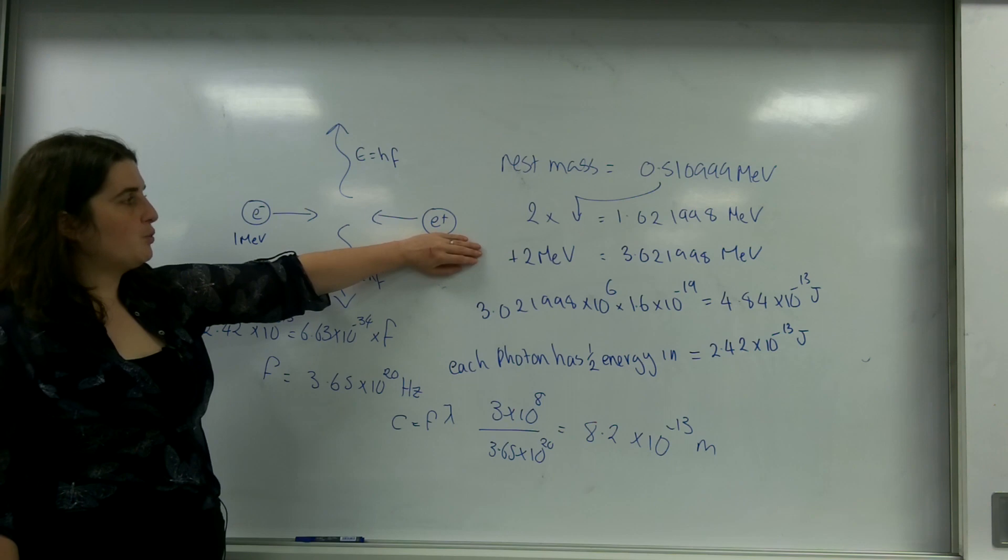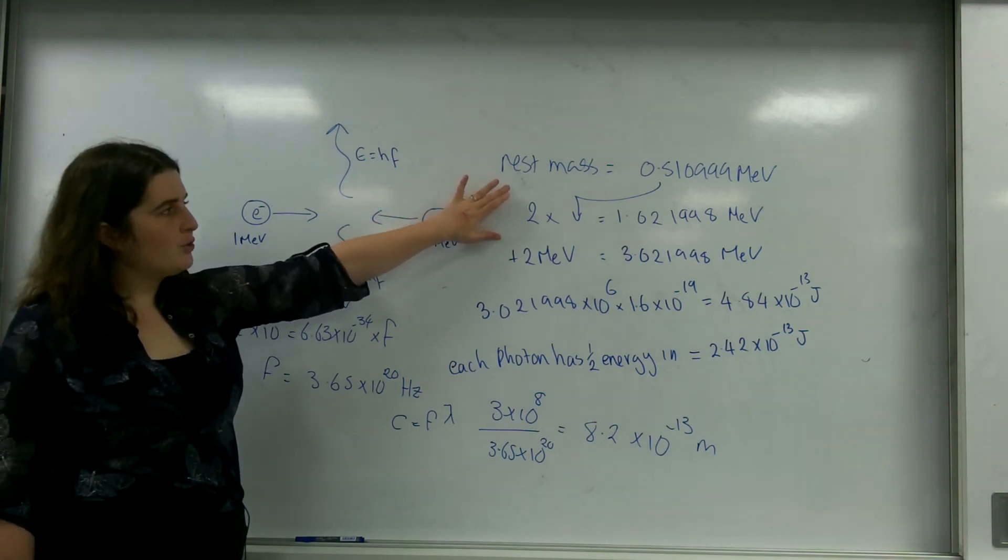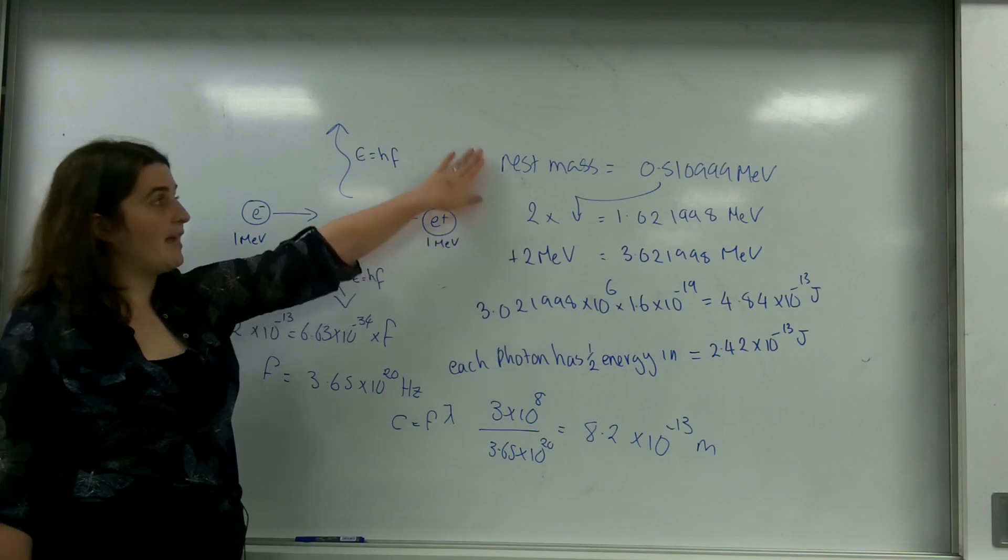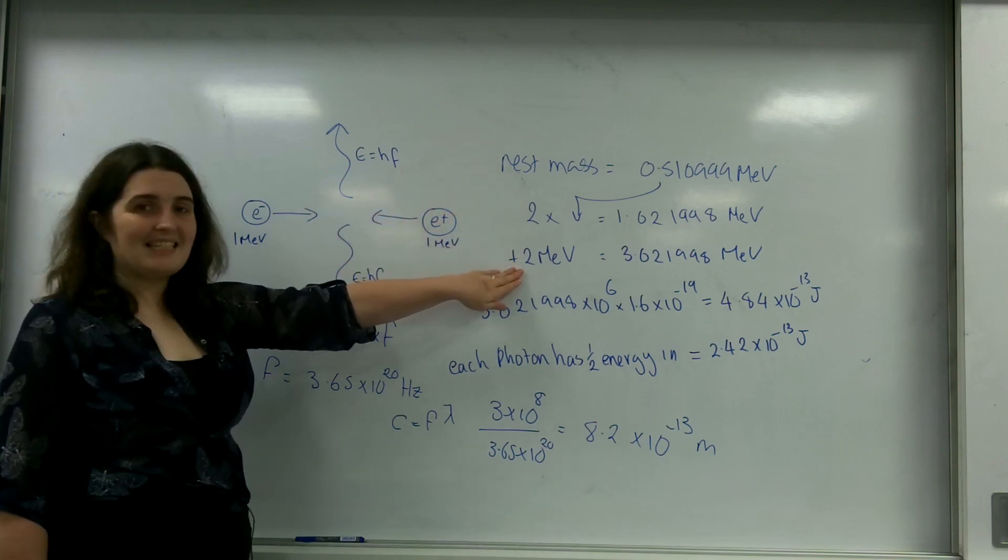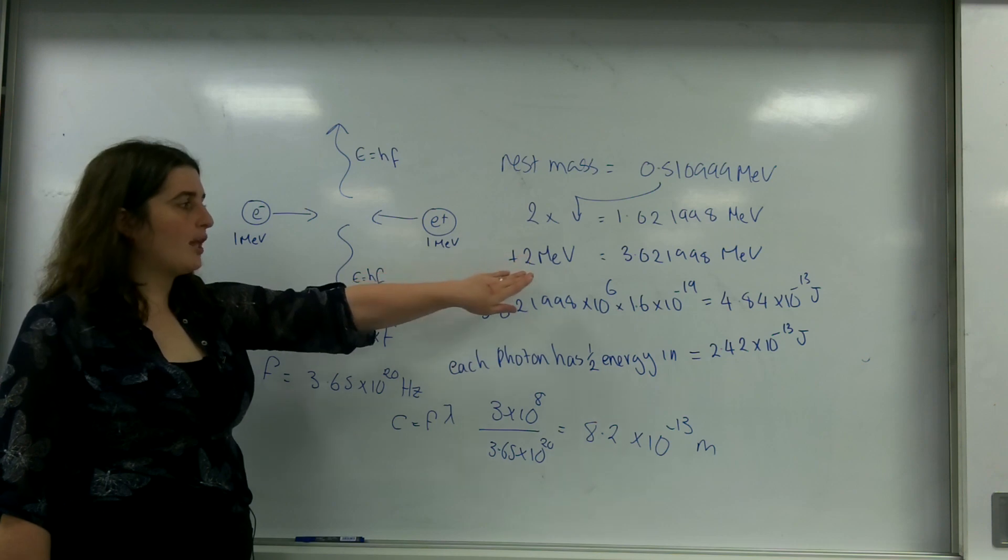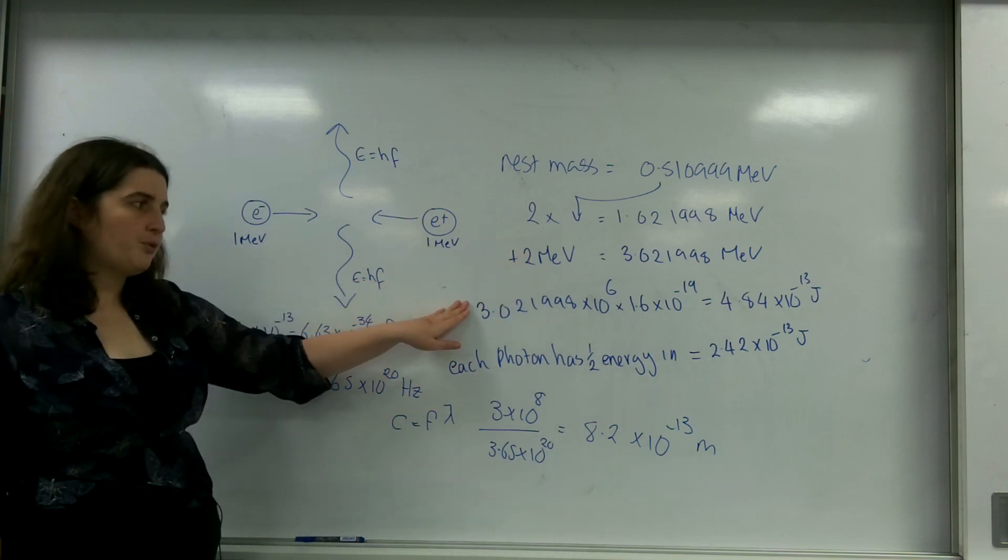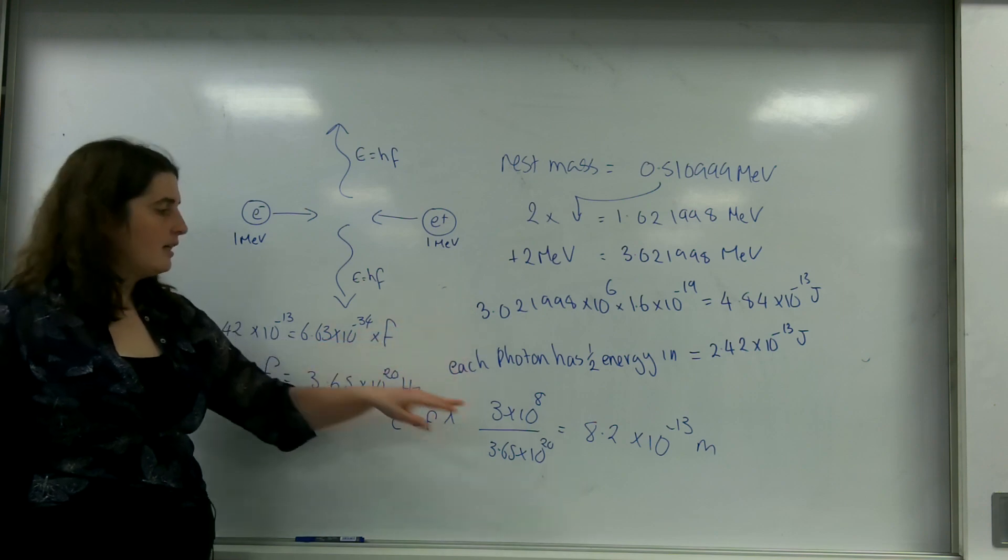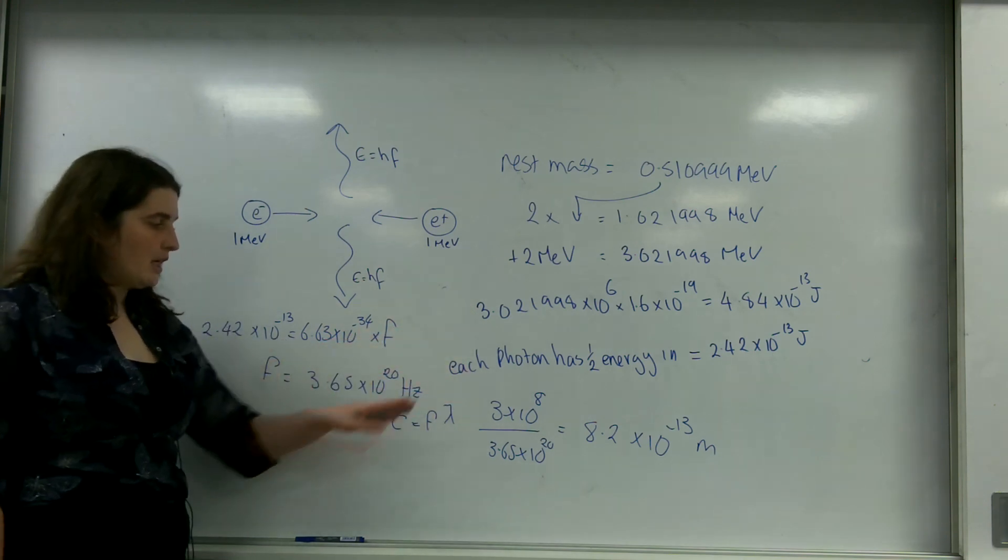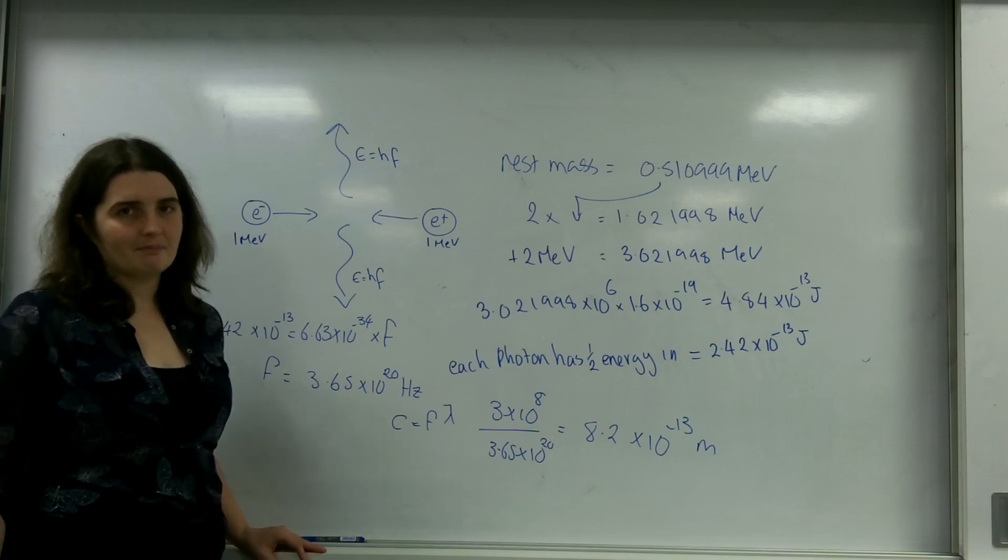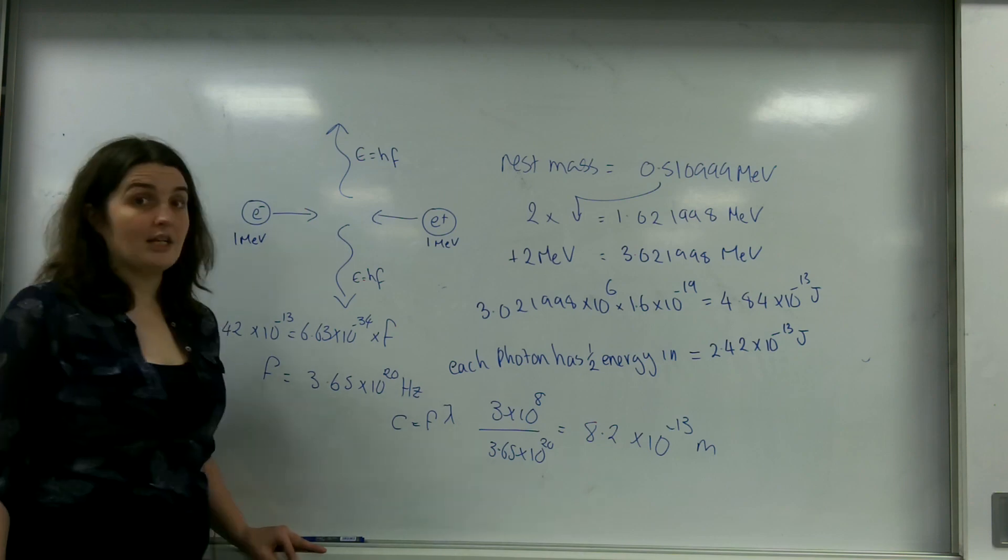But it's important to know in total how much energy you have. You have the energy of the mass, plus whatever kinetic energy it had, and that's your total energy here. You just convert that into joules before you do anything with frequency, and you can work out the frequency and the wavelength of the individual particles there. That is annihilation.